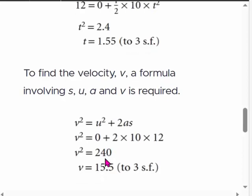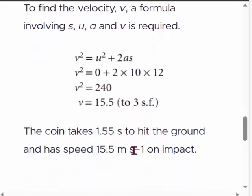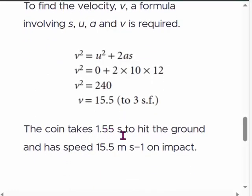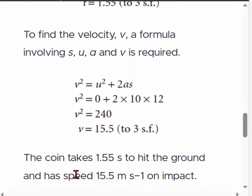v² = 240. Taking the square root, we get the positive value: v = 15.5 to 3 significant figures. So the coin takes 1.55 seconds to reach the ground and has a speed of 15.5 meters per second when it reaches the ground.